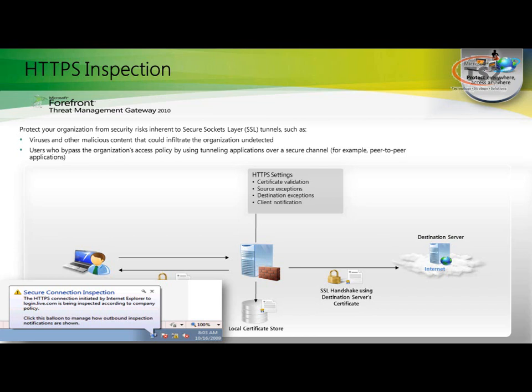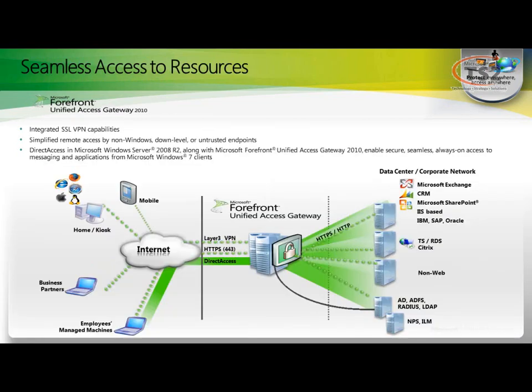Threat Management Gateway, again, is the firewall — its primary goal is to prevent inbound attacks. The Unified Access Gateway is our tool that gives us seamless access to our internal corporate resources for external users. Think about people who want to work from home on an employee's managed machine or even a home PC. How can we give those people access to corporate data safely and securely? What about old applications that were never built to be internet-aware? Forefront Unified Access Gateway lets us give users the capability of accessing those applications via a web browser, even when the application is completely unaware and not built to handle something like that.